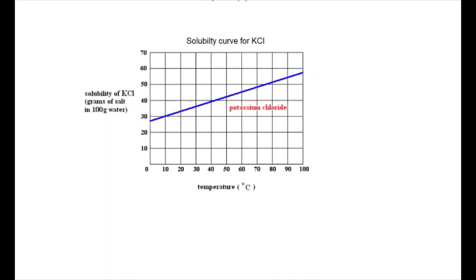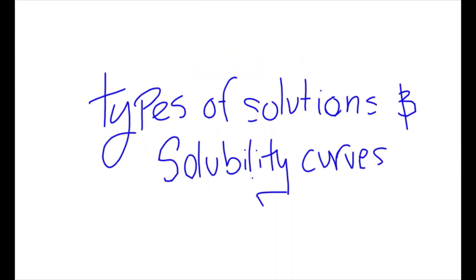However, in the question given, we have 45 grams of KCl, which is graphed as a point above the curve for the saturated solution, making this supersaturated. This makes sense because we are over our maximum capacity of solute, which is supposed to be close to 30 grams. I hope this video helped you to understand more about the different types of solutions and how to identify them from a solubility curve.